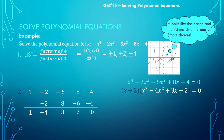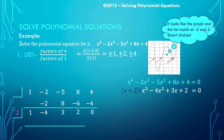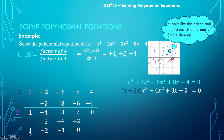I'll continue the process with positive 2. Using synthetic division on the cubic: bring down 1, multiply by 2, add to -4 to get -2, multiply by 2 to get -4, add to 3 to get -1, multiply by 2 to get -2, add to 2 — remainder of 0. So I can break the cubic into (x - 2) times the quadratic x² - 2x - 1.